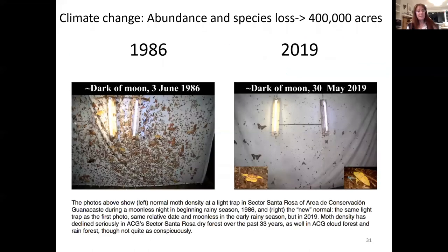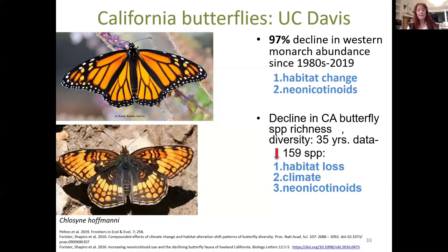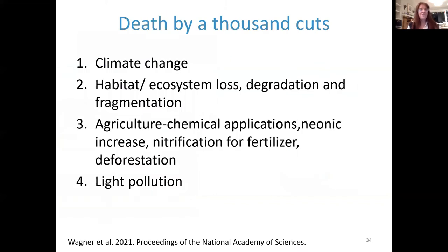Everything is getting drier and warmer. Research from Costa Rica by Daniel Janzen's group, returning to the same sites over 35 years, documents declines across all butterfly species — not just monarchs. Western monarch butterflies have declined 97%, but 159 species overall have declined, attributed to habitat loss, climate change, and neonicotinoid pesticides — what they call 'death by a thousand cuts': climate change, habitat loss, agrochemicals, and light pollution.